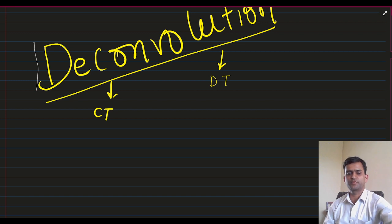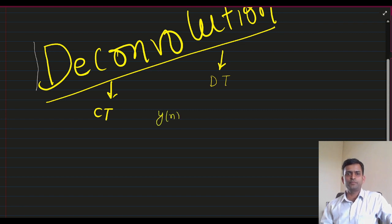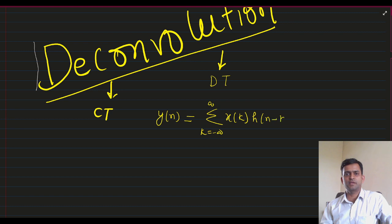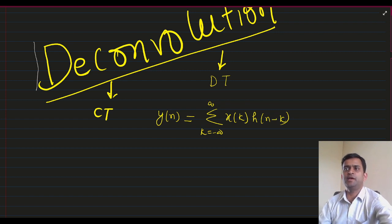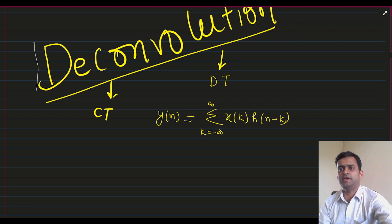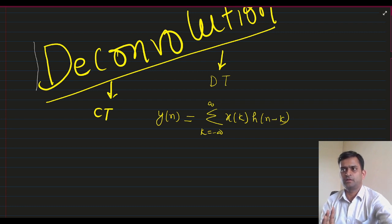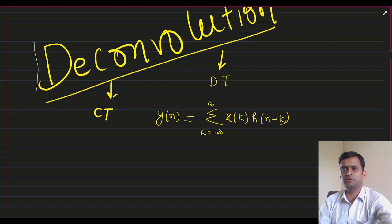Let us start the process for the discrete time system. In discrete time systems we know that the output of the system is calculated by y[n] equal to summation of k from minus infinity to infinity of x[k] times h[n minus k]. By using this equation we can calculate the output of the system, where x[n] is the input and h[n] is the system. If both x[n] and h[n] — the input signal and the system — are both one-sided, going from zero to infinity only, then the process will end at n.